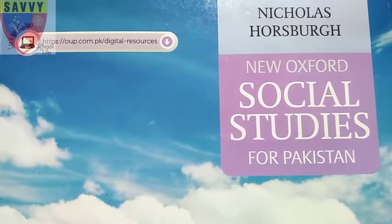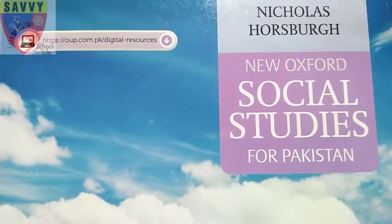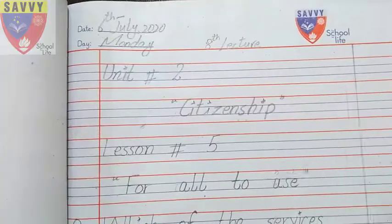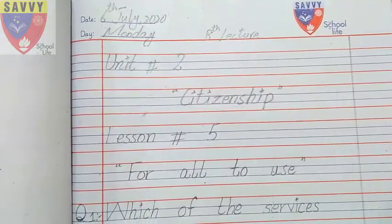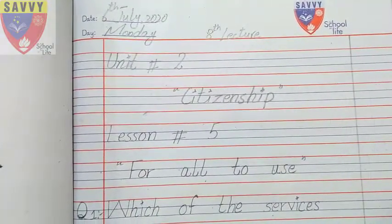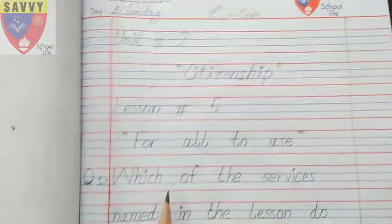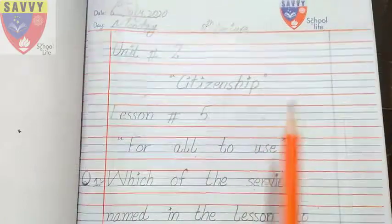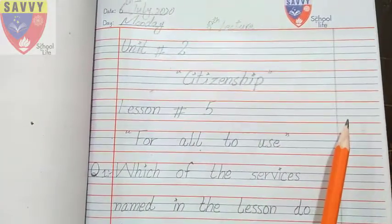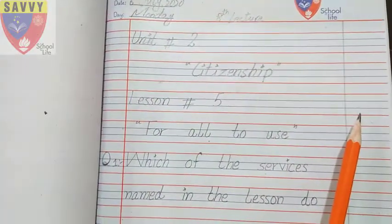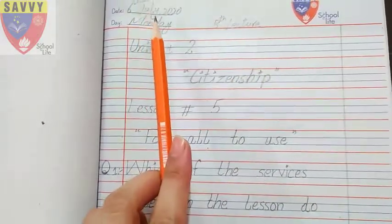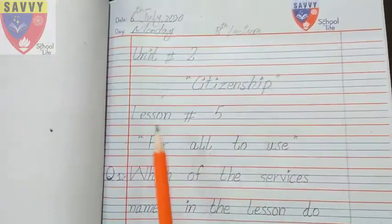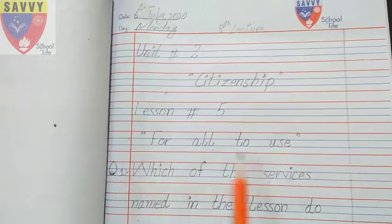Assalamu alaikum, good morning students. Hope you all will be fine. Without wasting our time, let's start our work. Unit number two, Citizenship, lesson number five. This will be a reading key — some question answers we will solve. In your notebook, first draw a margin line, two finger space, then write the date, day, unit number two, unit name, lesson number five, lesson name.